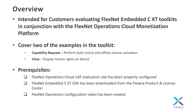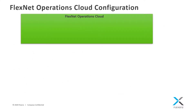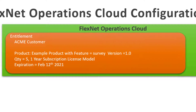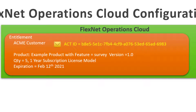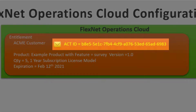As a refresher, in the previous video I covered the FlexNet Operations cloud configuration required to run the licensing examples. An entitlement was created for the Acme customer account for an example product that contained one licensed feature called Survey version 1.0. The account was entitled to a quantity of five licenses with a one-year subscription license model. In this example, the license expiration is February 12, 2021. An activation ID was automatically generated that will be used in the license activation process.